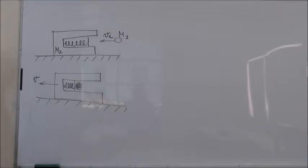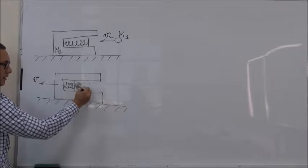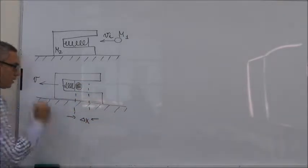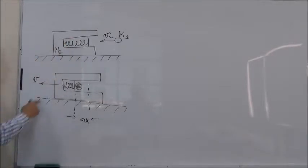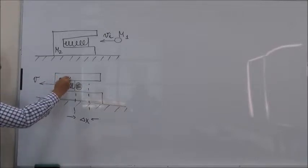The question is, what is the compression, maximum compression of the spring delta X? So we are given the masses, the initial velocity of the ball, the final velocity of the barrel and the gun when the spring is compressed and we are given the K constant of the spring.